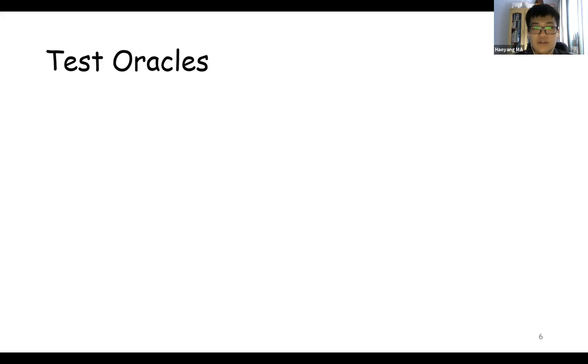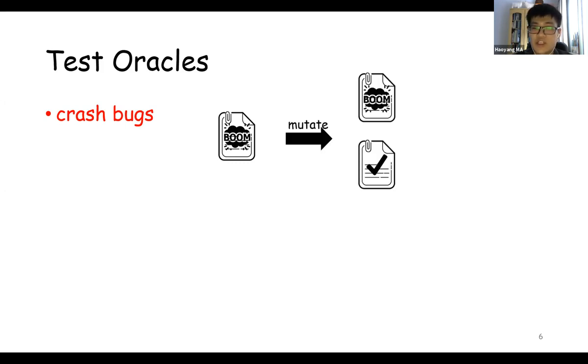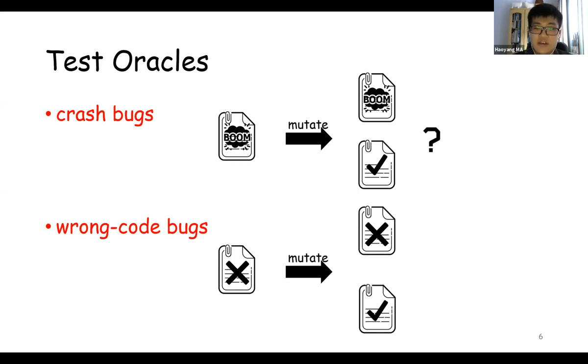So here comes our test oracles. We have two test oracles. The first one is for crash bugs. The crash bug means the bug trigger program will crash at some optimization level during compilation. The test oracle for it is: after mutation, we will check whether or not the mutated test program still crashes. The other test oracle is for wrong code bugs. Wrong code bug means the bug trigger program will output inconsistently under different optimization levels. The test oracle for it is: after mutation, whether or not the mutated test program still outputs inconsistently.